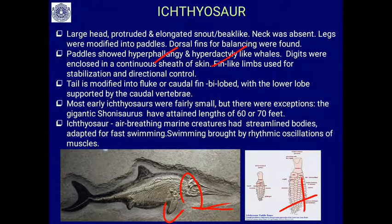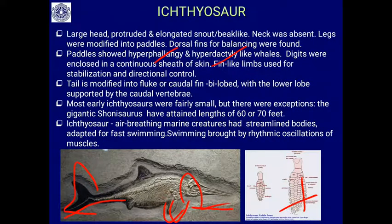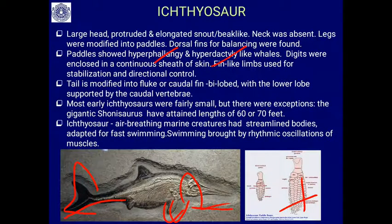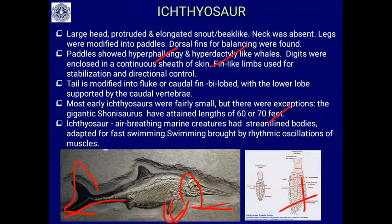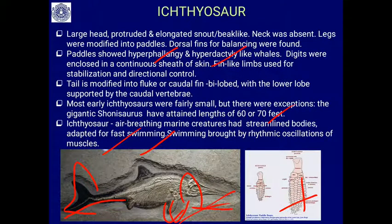The digits were enclosed in a closed sheath giving rise to flipper-like organization. The tail was modified into a fluke, similar to the fluke of whales, but with the vertebral column in the lower lobe. Ichthyosaurs were air-breathing marine creatures with a streamlined body adapted for fast swimming, brought about by rhythmic oscillations of the muscles.